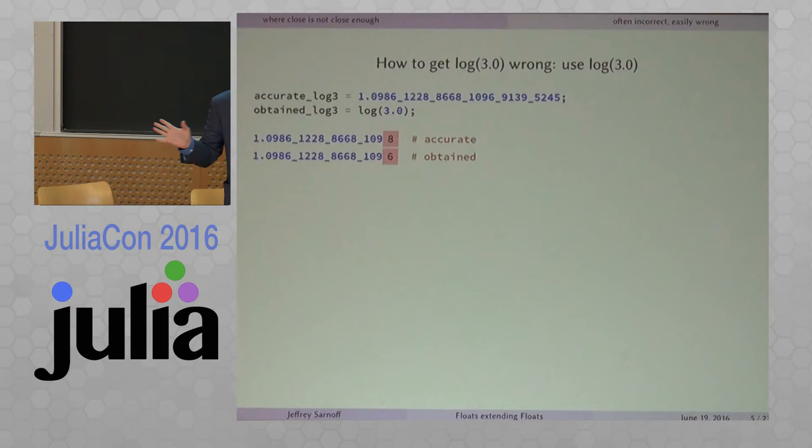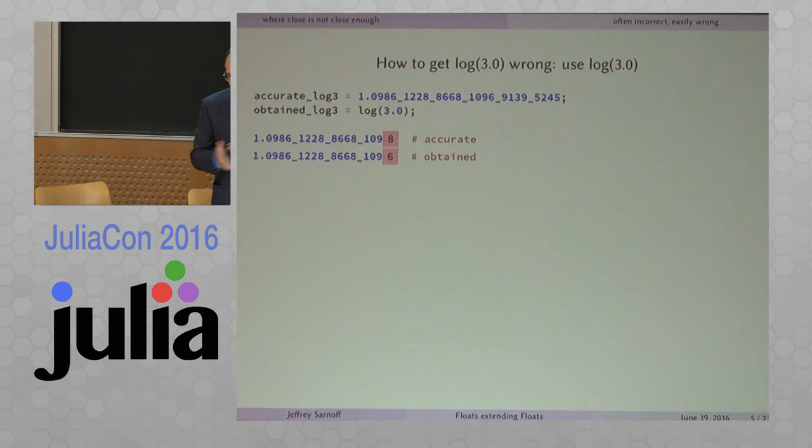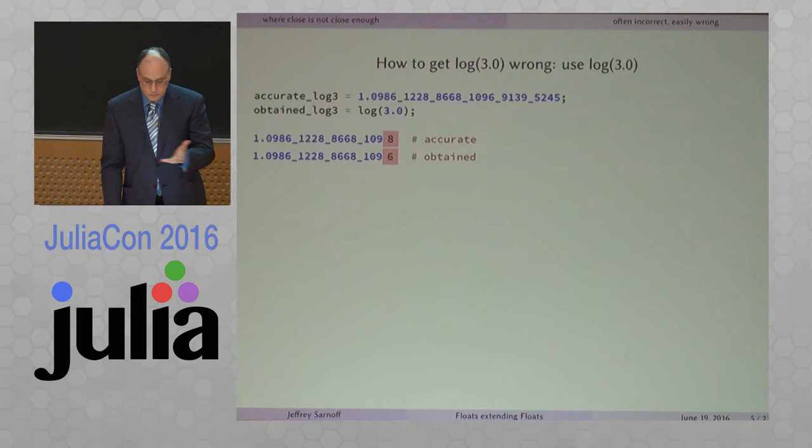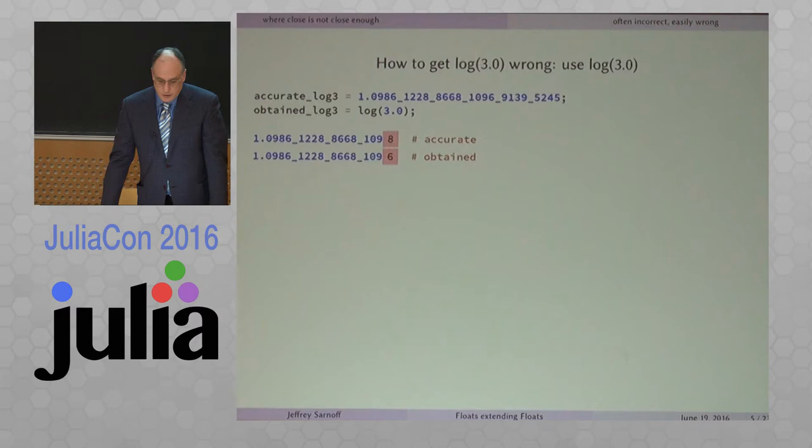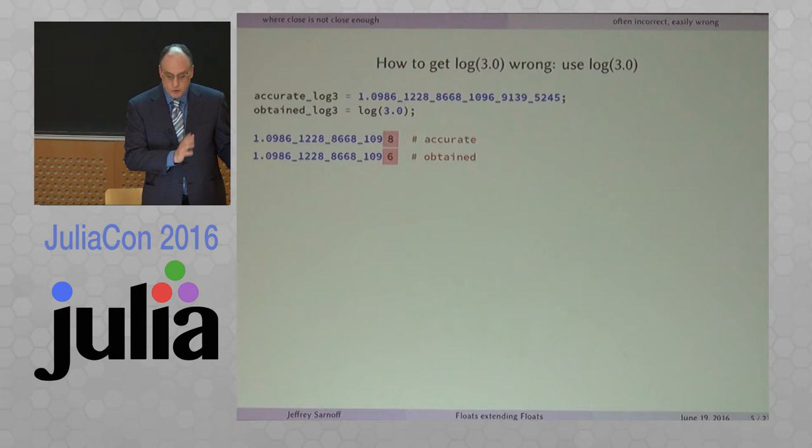So you open up Julia, and you ask her to tell you what is the log of 3. And she does, and as far as Julia knows, she has given you the right answer. It turns out that that answer is off by 1 in the least significant bit. And again, it doesn't seem like such a big deal, but the logarithm of 3, that's not a very esoteric thing to want to know. And it is disappointing that you just don't know with any of the transcendental functions, and you don't know which ones are spot on and which aren't.